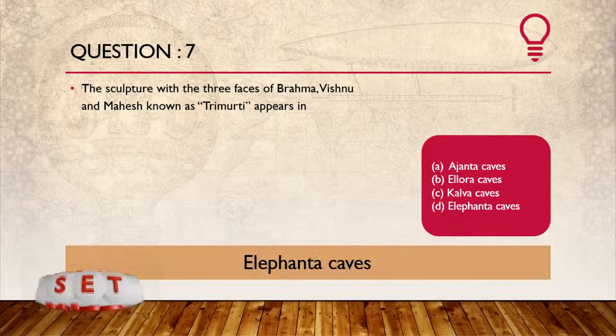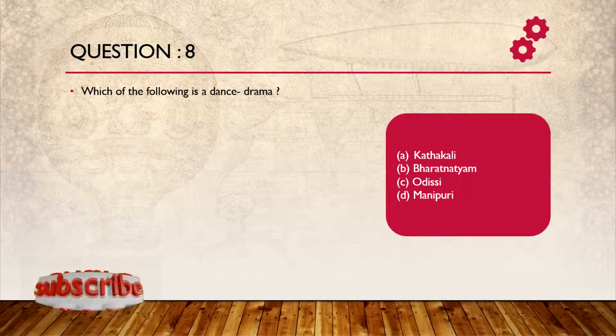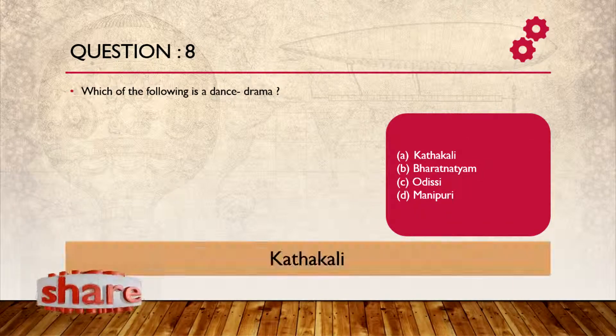Question number 7: This sculpture with three faces of Brahma, Vishnu, and Mahesh, known as the Trimurti, appears in the Elephanta Caves. Question number 8: Which one of the following is a dance drama?